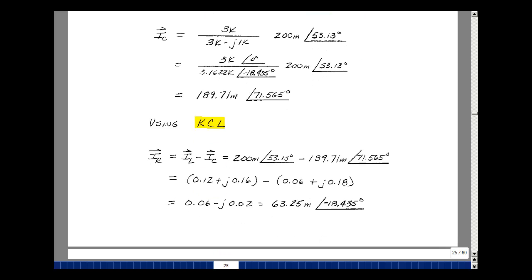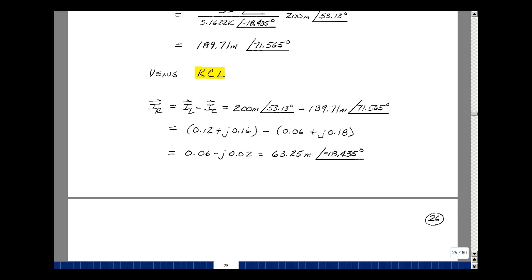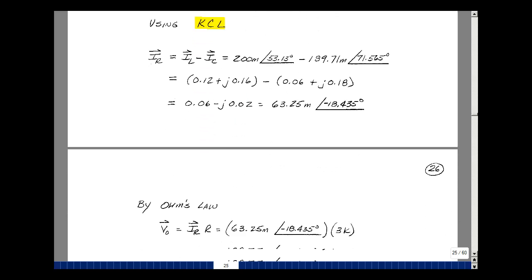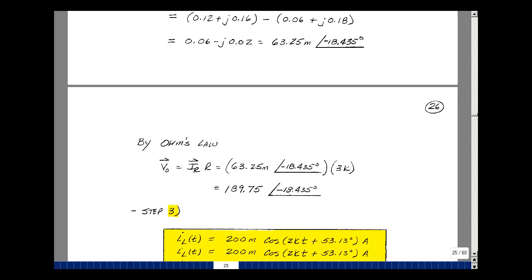So let's find the output voltage. Since we know the current in the resistor and the value of the resistor, we can find the voltage across it. I guess that was 63.25 milliamps at angle minus 18.435 degrees. And then the resistor is just 3K,